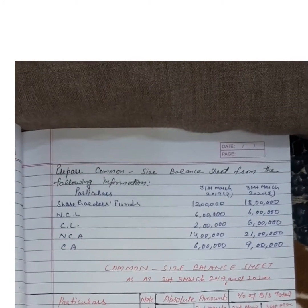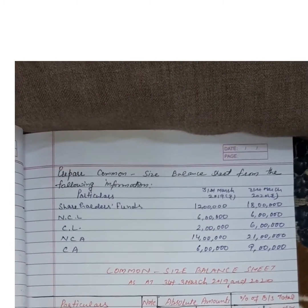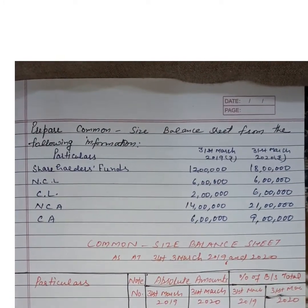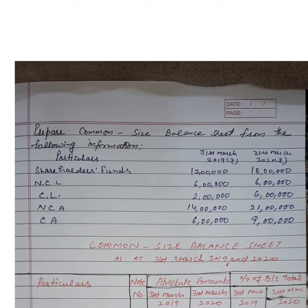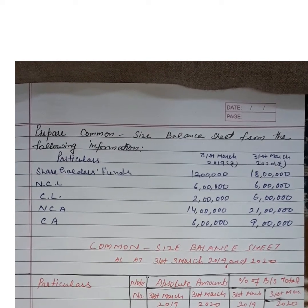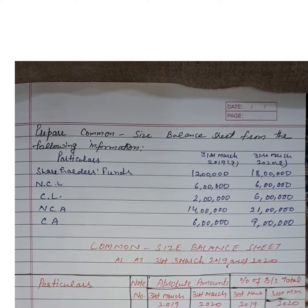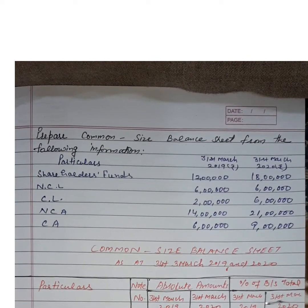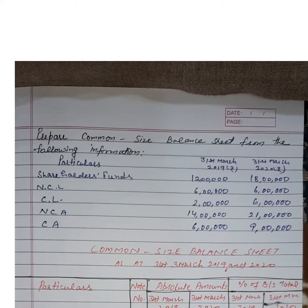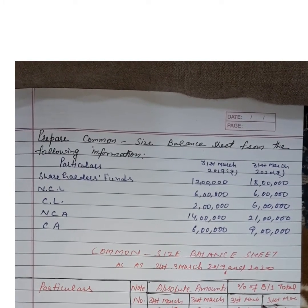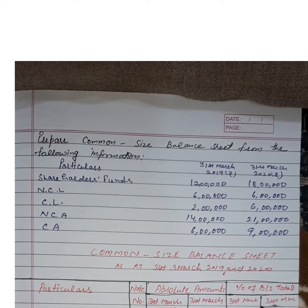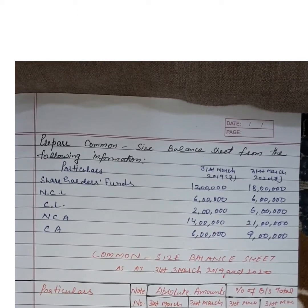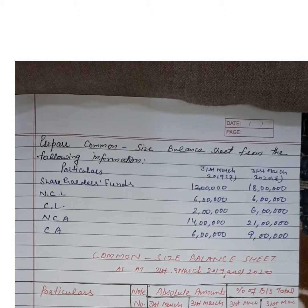Firstly, हम इसमें सीखेंगे Common Size Balance Sheet. Common size balance sheet for different periods helps to highlight the trend in different items — different items के trends को highlight करती है। It is prepared for different firms in an industry; it facilitates assessing the relative financial soundness.